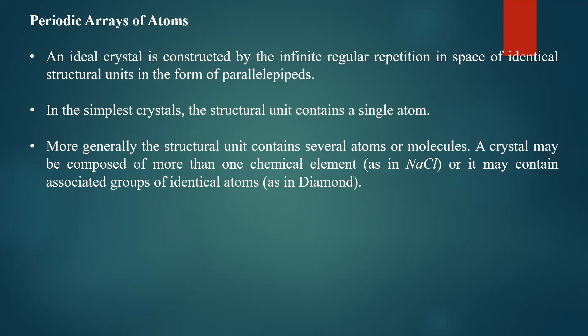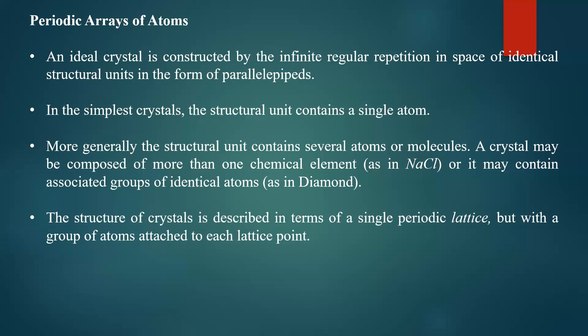In diamond, a group of carbon atoms becomes the structural unit, not a single atom. Therefore, the structural unit may be an atom, a molecule, or a group of atoms. The structure of crystals is described in terms of a single periodic lattice with a group of atoms attached to each lattice point.